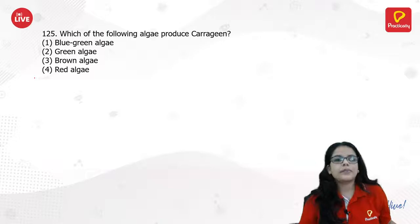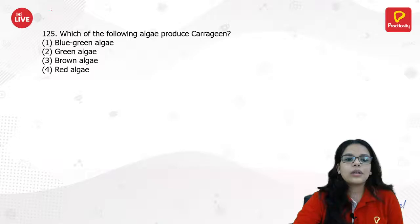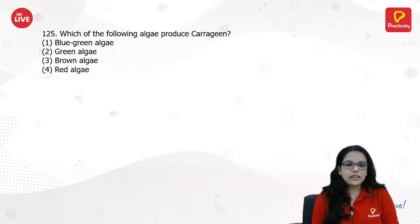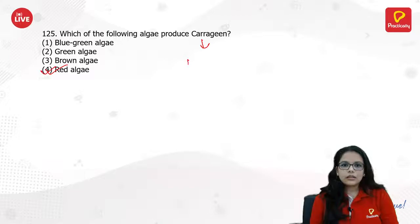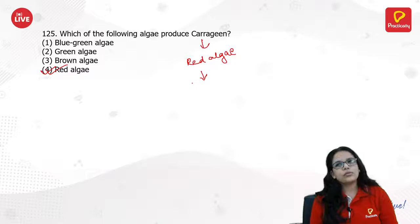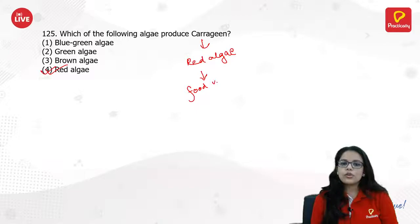Which of the following algae produces carrageenan? Carrageenan is actually produced with the help of red algae — it is extracted from red algae and mostly used in food industries. Nowadays it is also used for medicinal purposes. The answer is red algae.